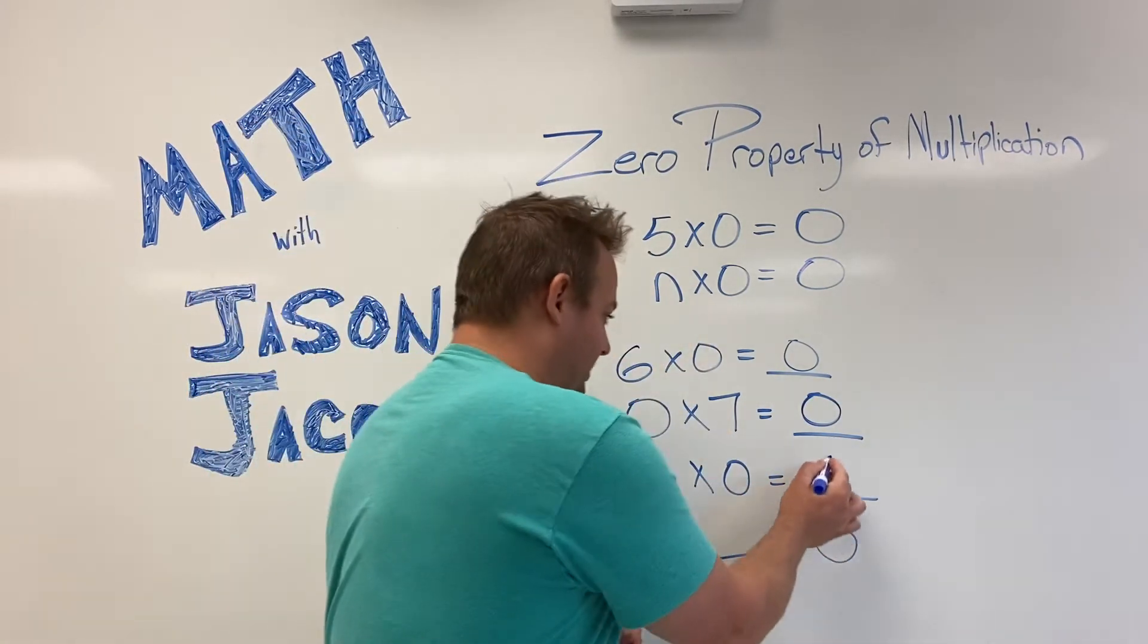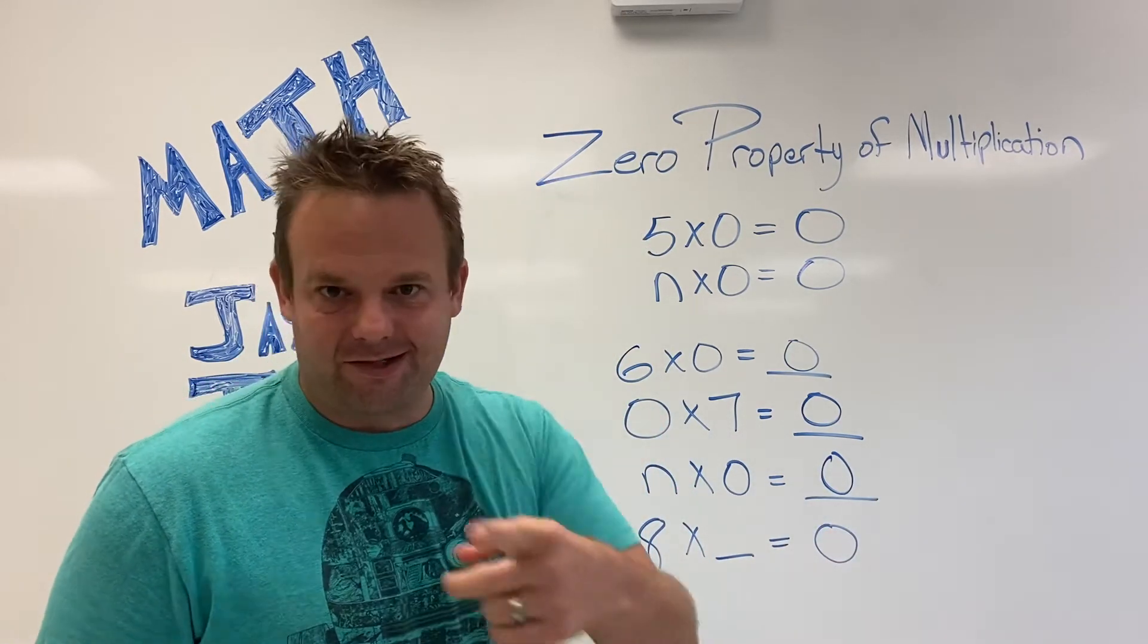n times zero, well, I guess we already did that. That's zero. Eight times one is zero. That's right, zero.